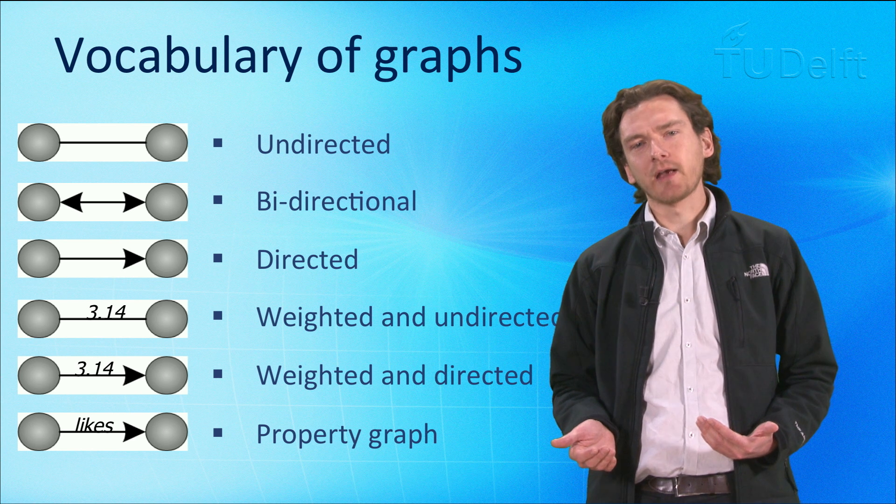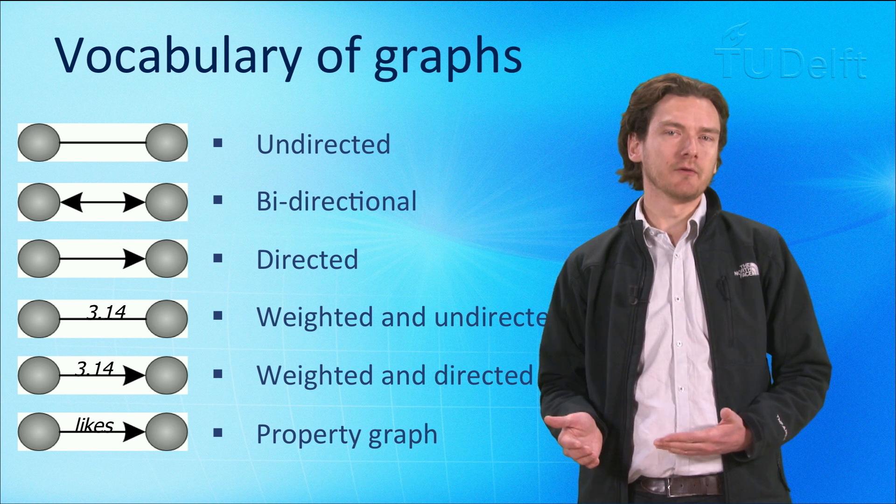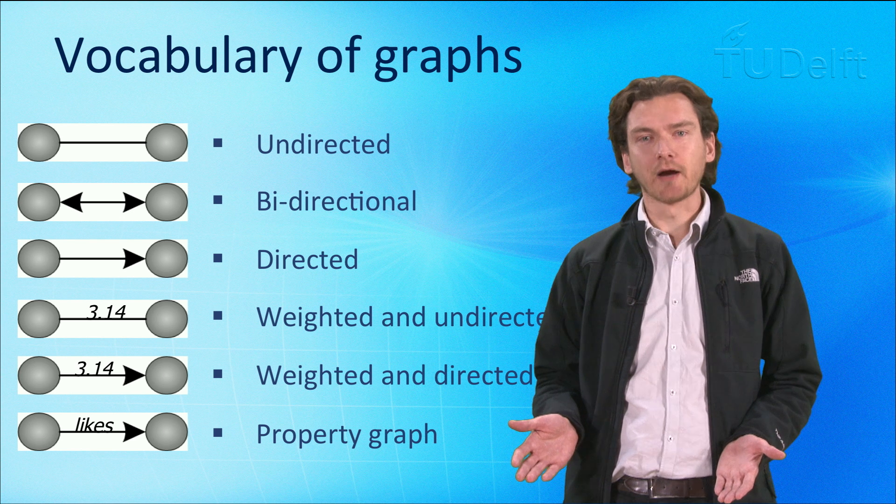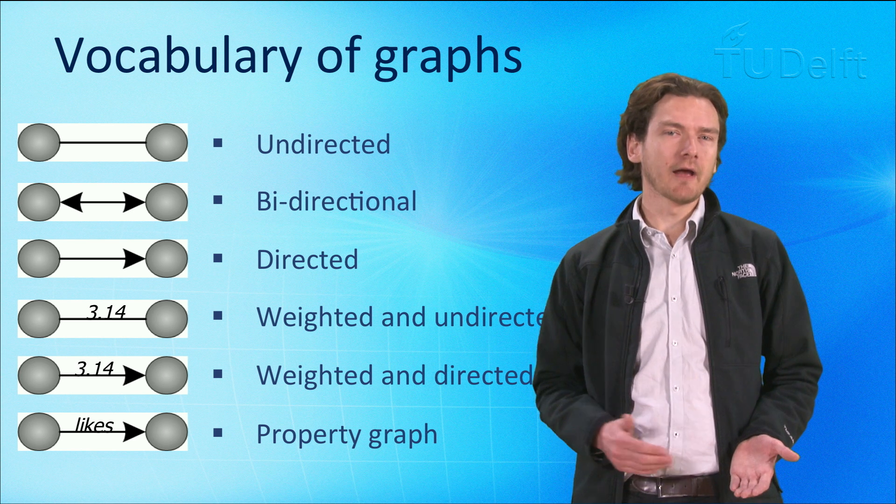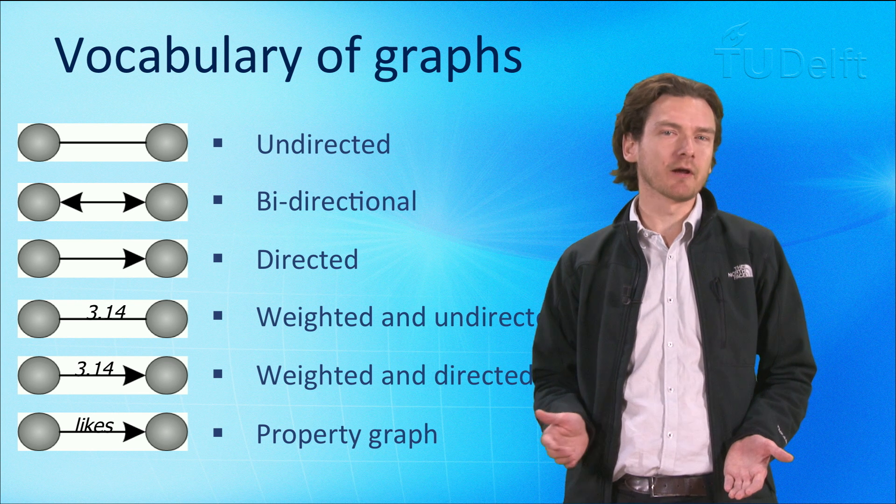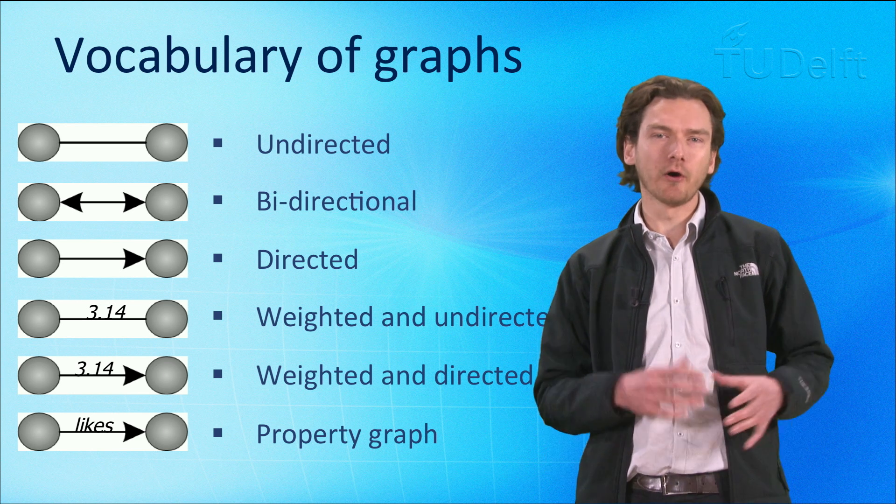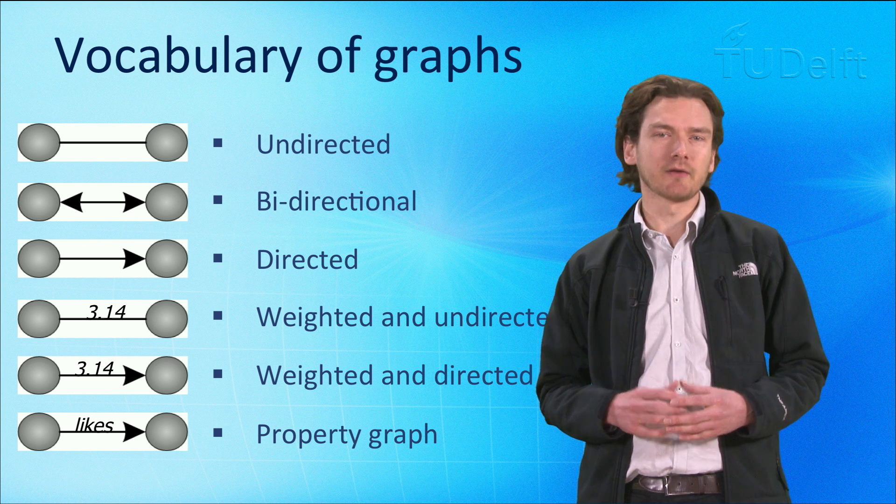A weighted graph indicates that the edges have some number associated with them. This could indicate the value of the monetary transaction between the two nodes. You can also have what is called a property graph, where edges have a label or a particular meaning. You can think of Facebook as being a giant property graph, where you are a node, and you have edges connecting you to things that you like.